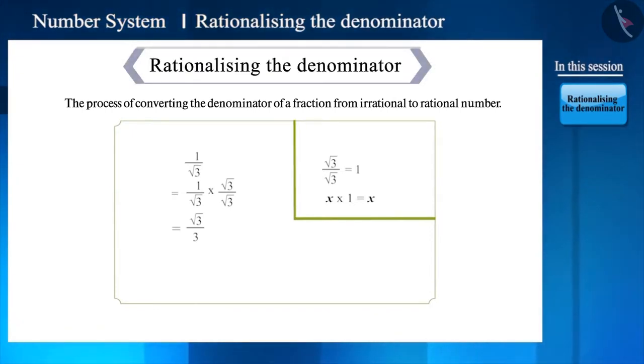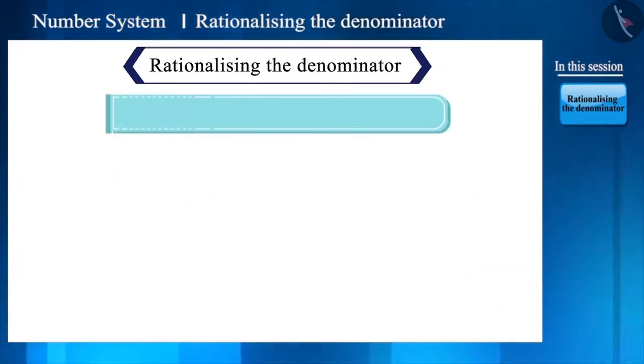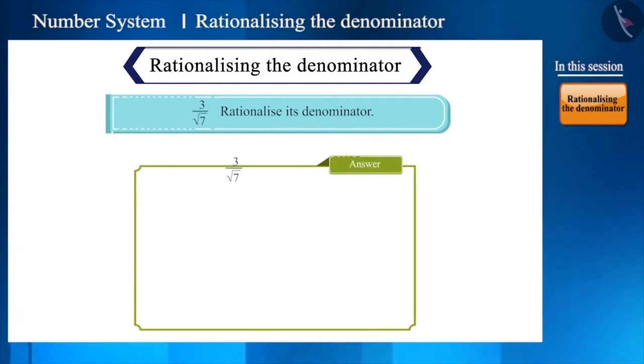Let us see another example: 3 by root 7. Rationalize the denominator of this fraction. Here, if we multiply the numerator and denominator by root 7, then we get 3 root 7 by 7. It means that now the denominator has turned into a rational number.